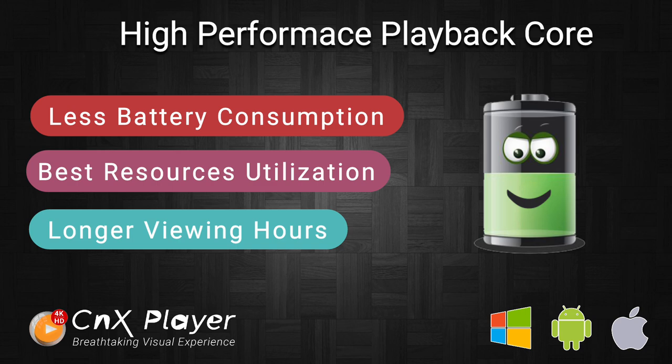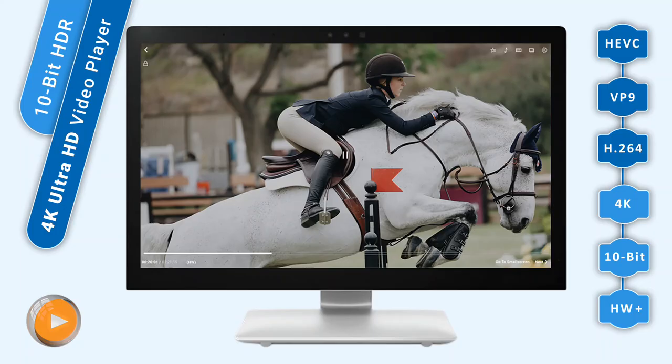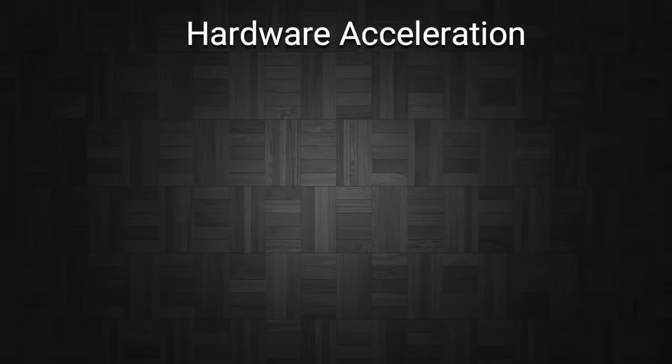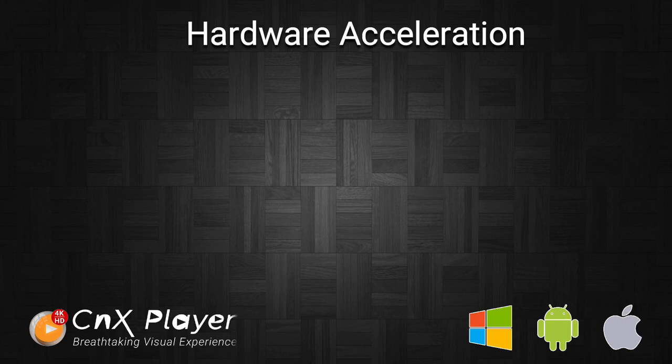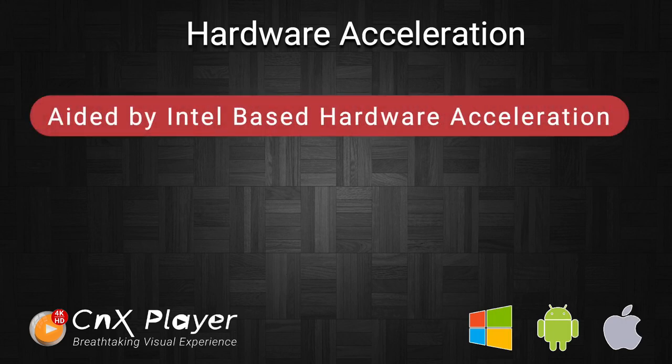To play any video, codecs play an important role. CNX Media Player's core framework has a remarkably highly optimized implementation of hardware video decoders, with the best usage of available resources. The hardware acceleration contributes significantly to the performance and smooth playback of high-resolution 4K Ultra HD content.